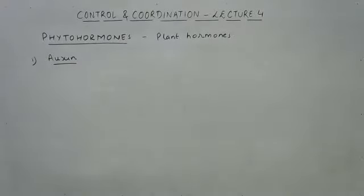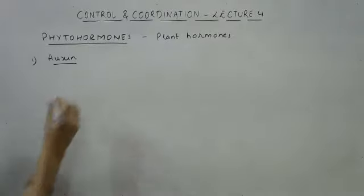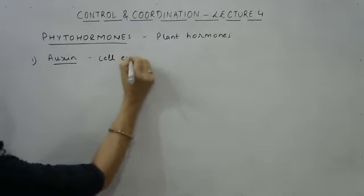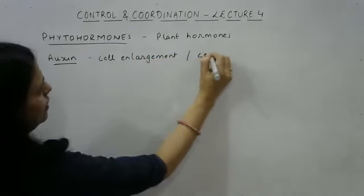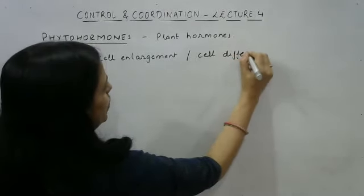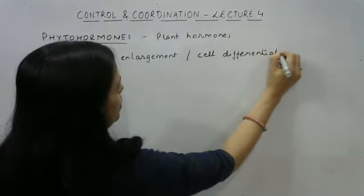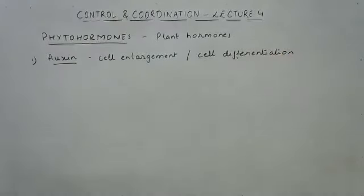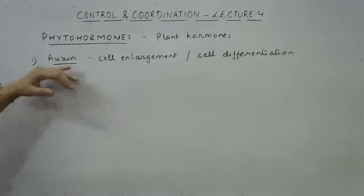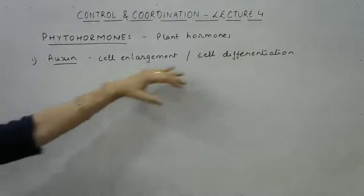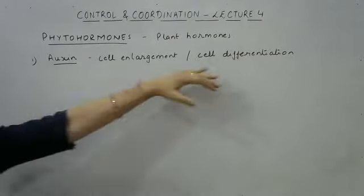The first plant hormone is auxin. Its function is to help in cell enlargement and cell differentiation. In class 9 you studied what cell differentiation means — once a cell loses its meristematic ability, it gets differentiated into a particular type of permanent tissue depending on where it is located in the plant. Auxins help in the growth of the cell first, and then in cell differentiation when the cell acquires a permanent function.